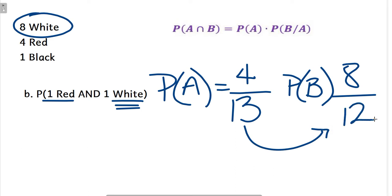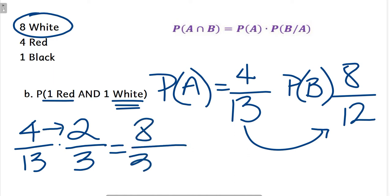Four thirteenths times eight twelfths is how we're going to do this. I really think you should simplify these fractions. Don't multiply ugly fractions if you don't have to. So four thirteenths times, instead of eight twelfths, we're going to divide both by four and get two thirds. Then we can multiply. Four times two is eight, thirteen times three is thirty-nine. That is our answer, eight thirty-ninths.